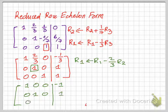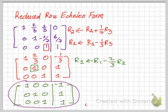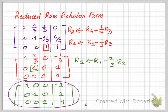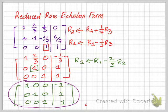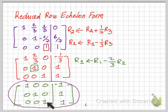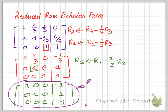Doing this operation gives us a new matrix. All columns containing pivot positions have the pivot as the only non-zero value. The first pivot is the only non-zero value in the first column, the second pivot is the only non-zero value in the second column, and the third pivot is the only non-zero value in the third column. We have achieved the reduced row echelon form.